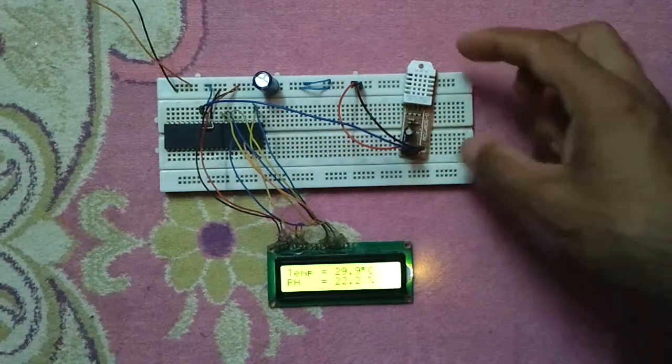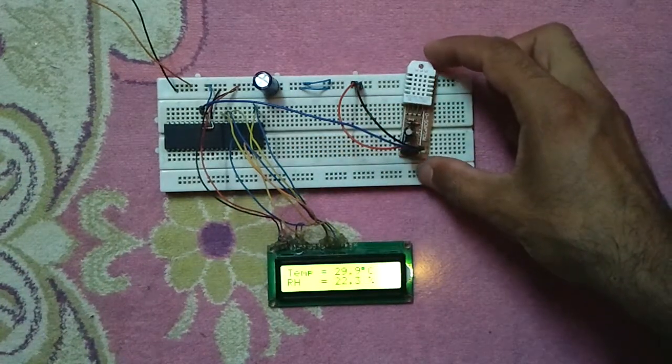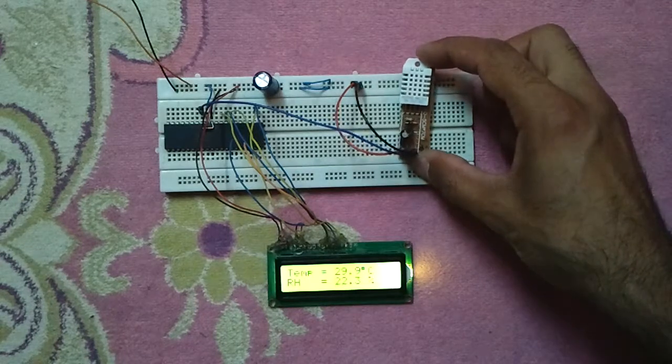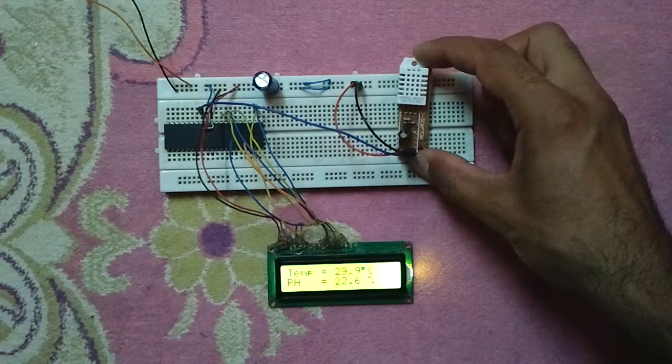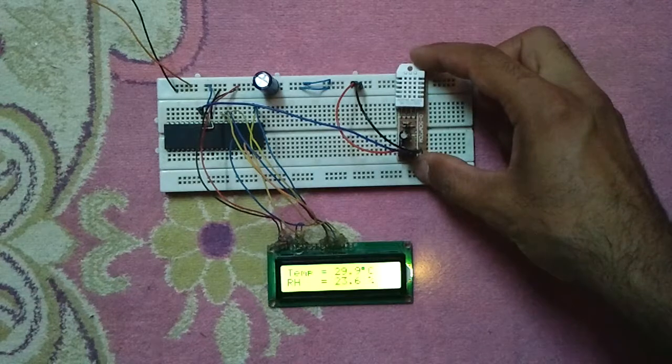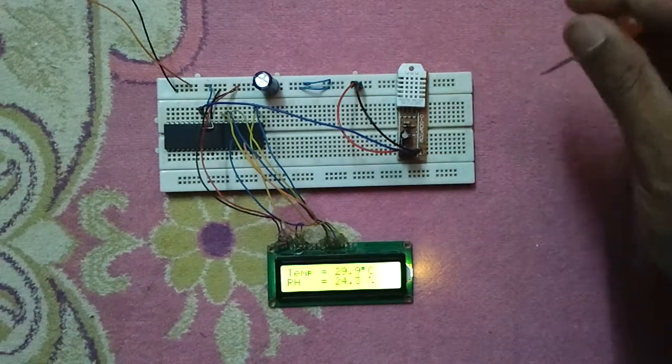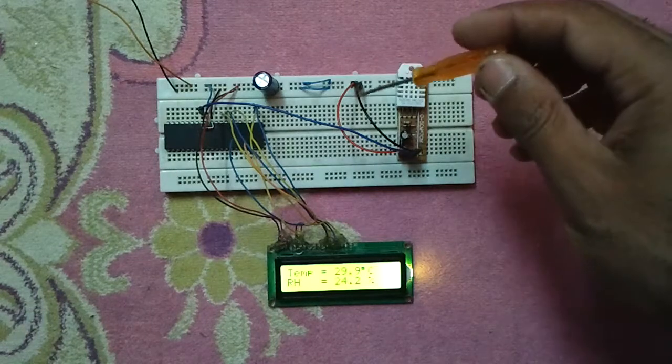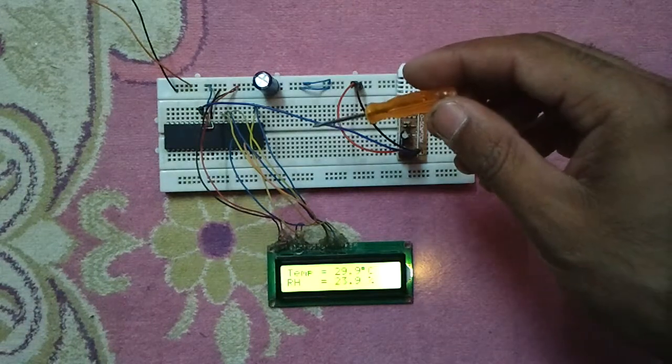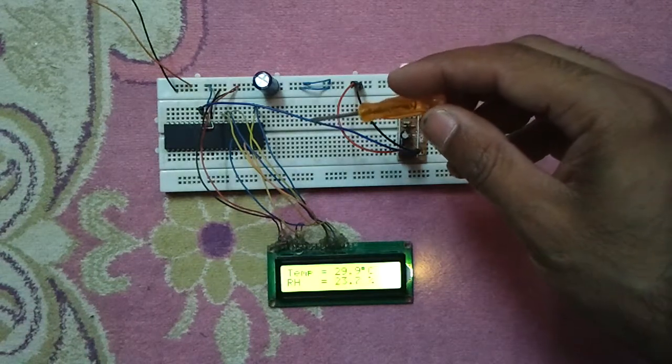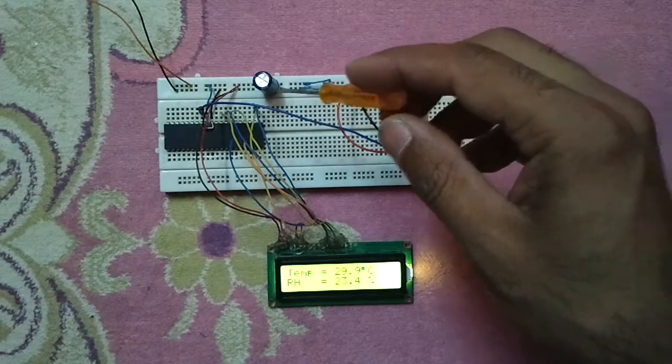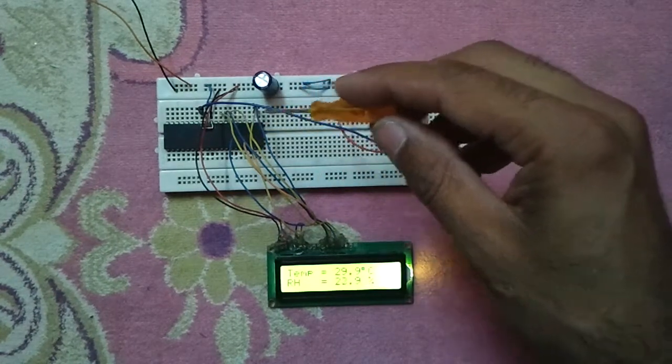This is the DHT22 digital sensor. Basically, this sensor has three pins: plus 5 volt, ground, and the last one is the data pin. In our case, it is connected to RB0 pin of the microcontroller.